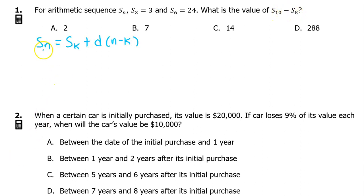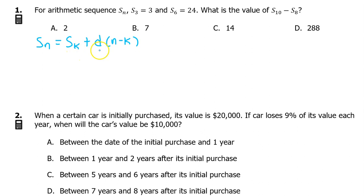We have learned that an arithmetic sequence can be modeled by Sn equals Sk plus D times n minus K, where Sn is the nth term of the sequence, Sk is term K, and D is the common difference. When you are given two terms of the sequence, that's enough to write the equation.